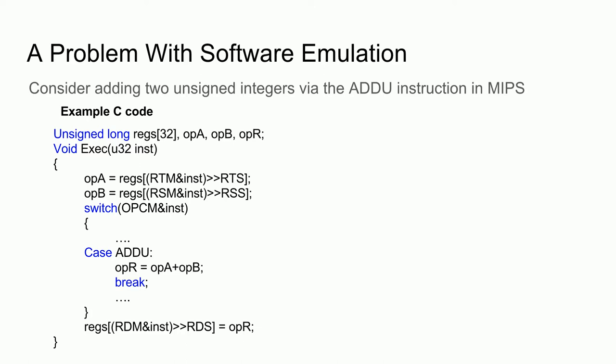Now let's add up the total operations this would require. Since the value retrieval requires a logical AND, a shift, and a memory load, they each take three operations. Likewise, storing the value back also takes three. Pulling the operation part out of the instruction takes one operation, and jumping to the ADDU part of the code will depend on the compiler, but let's say it takes around three operations — an add, a load, and a jump. The adding takes one operation since the CPU can add two numbers by itself, and leaving the switch statement takes another jump. Adding all that up, we have 15 operations.